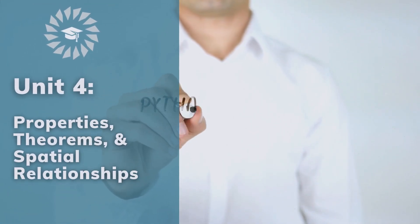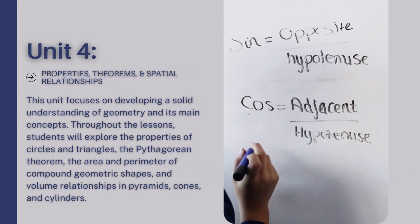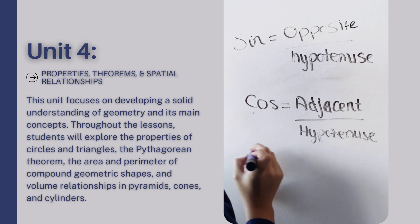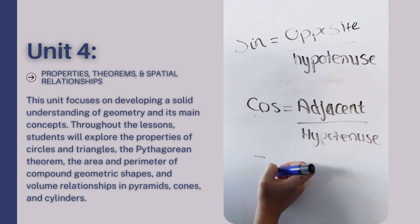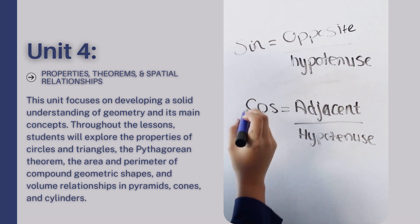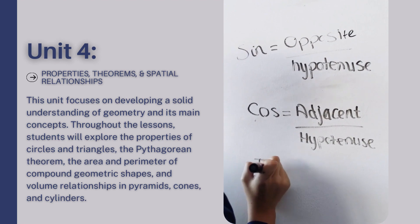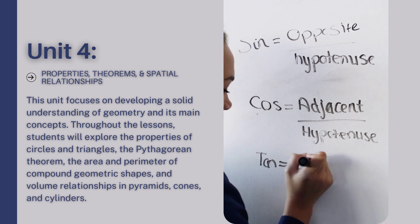Unit 4, Properties, Theorems, and Spatial Relationships. This unit focuses on developing a solid understanding of geometry and its main concepts. Throughout the lessons, students will explore the properties of circles and triangles, the Pythagorean Theorem, the area and perimeter of compound geometric shapes, and volume relationships in pyramids, cones, and cylinders.